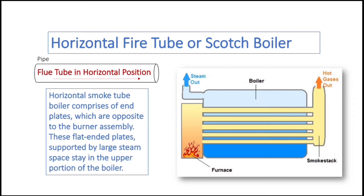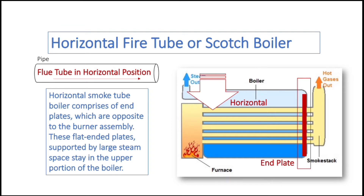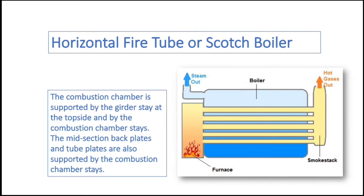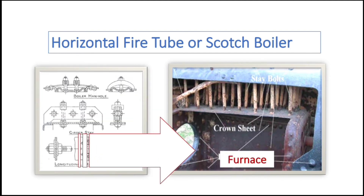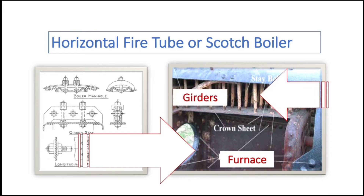The horizontal fire tube boiler comprises endplates, which are opposite to the burner assembly. These flat endplates are supported by large steam space stays in the upper portion of the boiler. The combustion chamber is supported by the girder stay at the top side and by the combustion chamber stays. The midsection backplates and tubeplates are also supported by the combustion chamber stays.